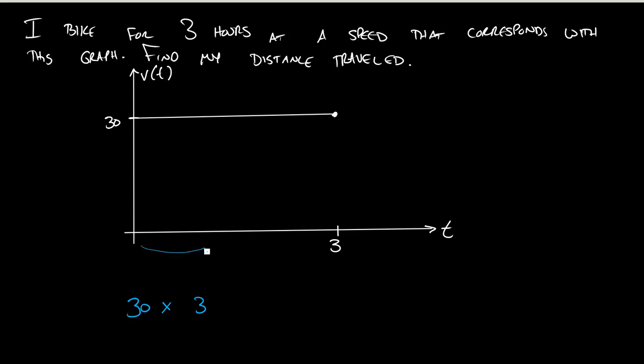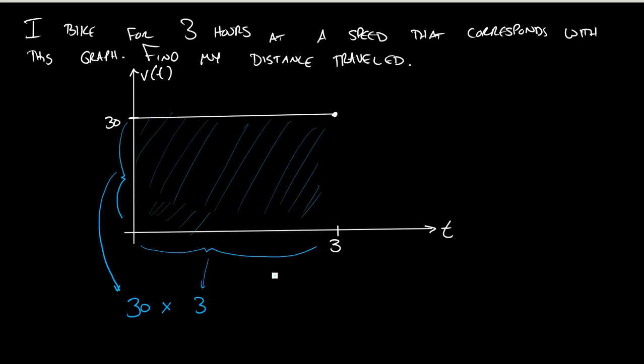I have a length, 3, right? And I have a height of 30, and so when I'm multiplying this 30 and 3, I'm really finding the area of this rectangle here, right? This area ends up being 90 miles. That ends up being my total change.